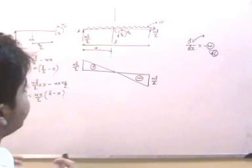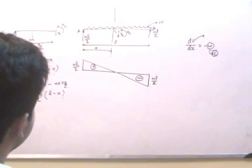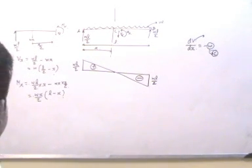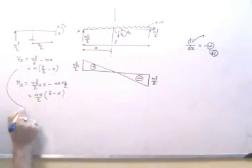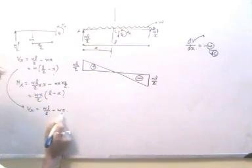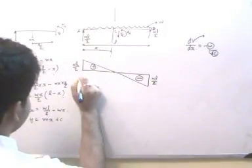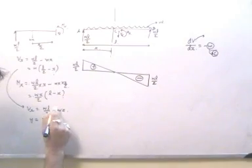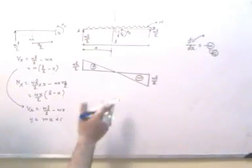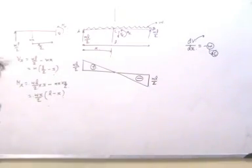From studying the shear force diagram, whenever there is a uniformly distributed load with W constant, V will be a straight line. Writing VX as WL/2 minus WX in the form Y equals MX plus C, the intercept is WL/2 and the slope is equal to minus W. So the slope of the shear force diagram is minus W.